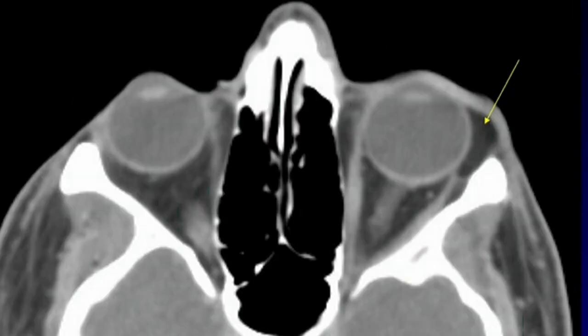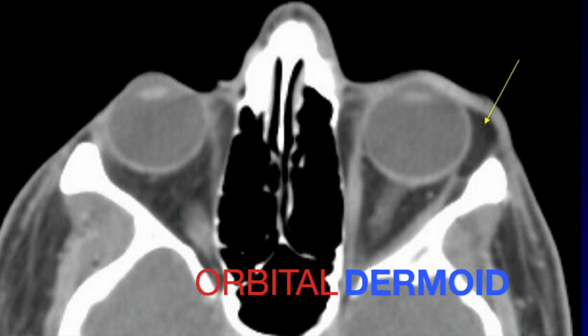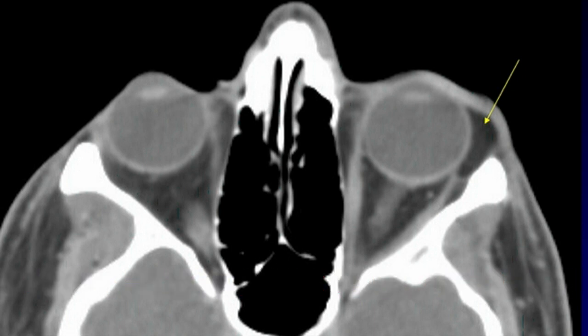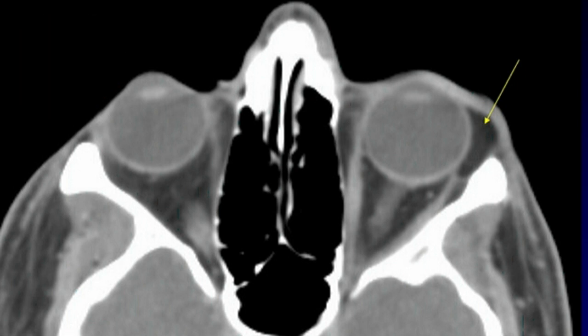If you see a mass in the orbit that looks just like a lipoma, don't call it a lipoma — it is probably an orbital dermoid. These look just like lipomas; they are filled with fat. They do not look like lipomas clinically, however, because unlike a soft lipoma, these are hard. So it's very easy to distinguish the lipoma from the dermoid clinically, but they look the same radiologically. In this location, it's much more likely to be a dermoid than a lipoma.